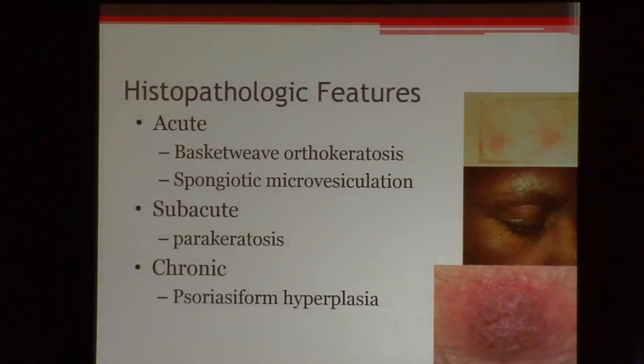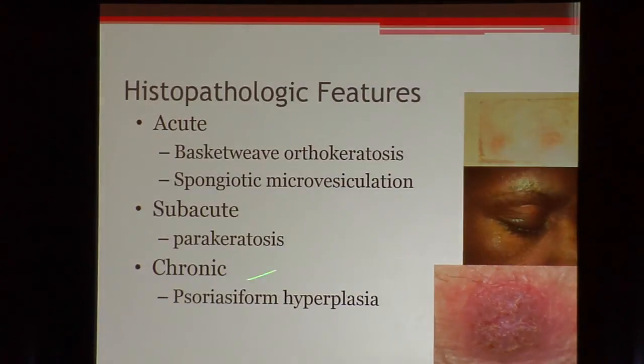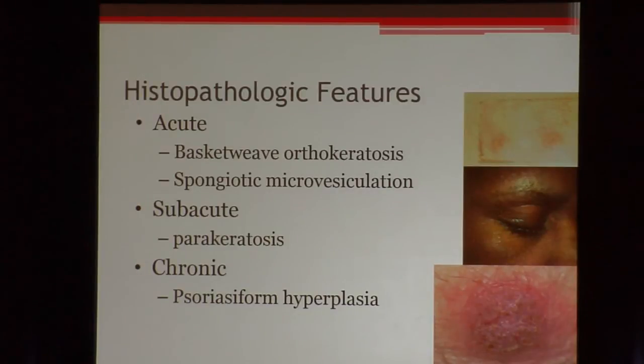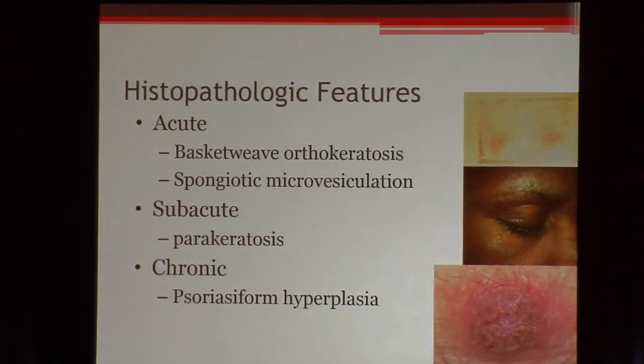On our report, I give the reaction pattern — this happened to be psoriasiform spongiotic dermatitis — and I give a differential, and usually do staining for tinea just to rule that out. Histologically, acute spongiotic dermatitis shows basket weave orthokeratosis, meaning a normal stratum corneum, with spongiosis and microvesiculation — small vesicles within the epidermis you may not even see clinically. All spongiosis is, is edema between the keratinocytes.